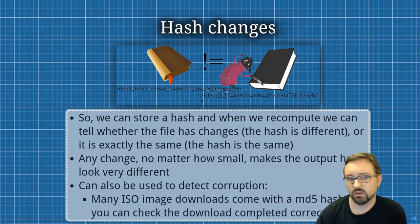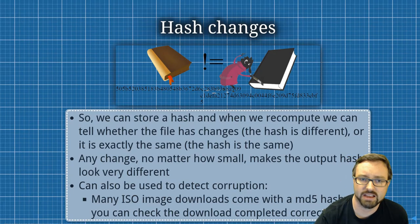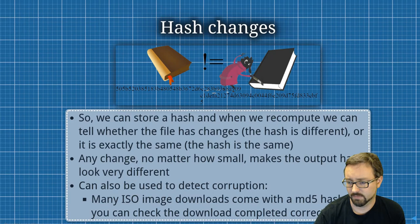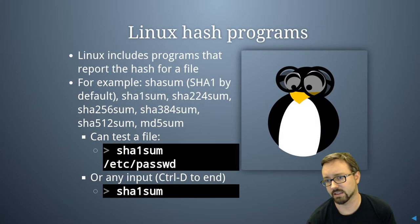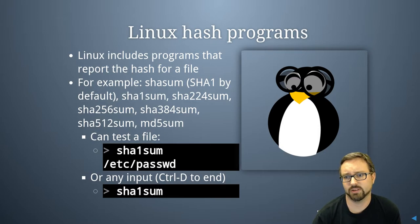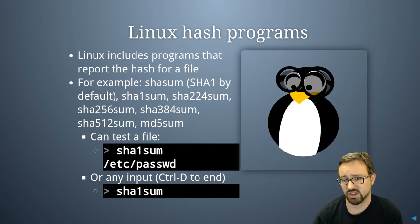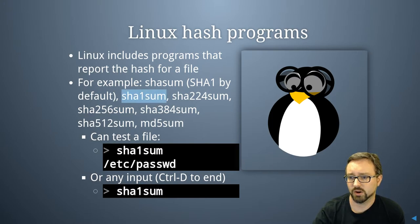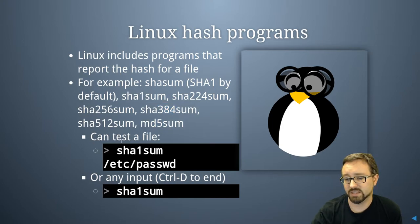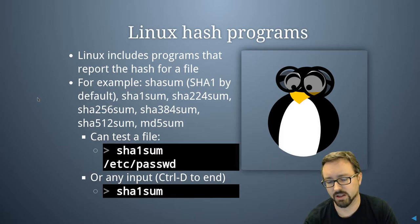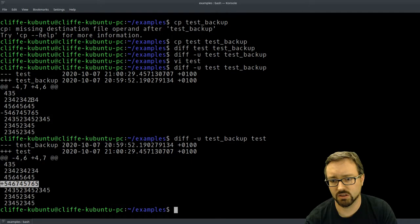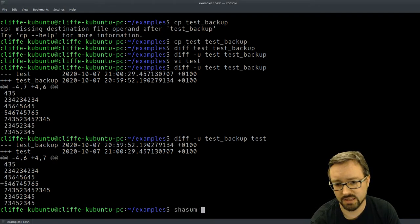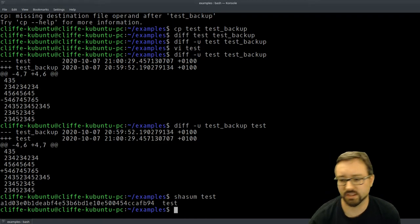Hashes can also be used to detect corruption — you see hashes used a lot when you download ISO images, where there's usually an MD5 hash you can use to check that the download worked correctly. Linux includes some programs that report the hash for a file. There's shasum, with different versions of the program for different versions of the algorithm, and then there's md5sum. You can hash a file easily by running shasum and then the name of the file and it gives you a hash.